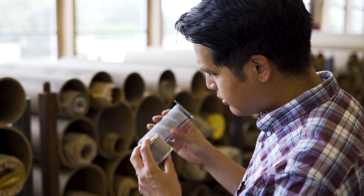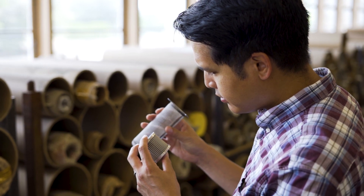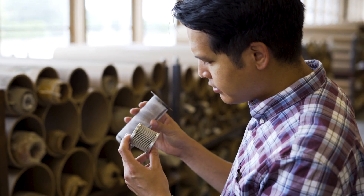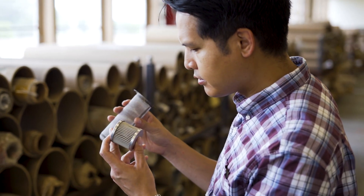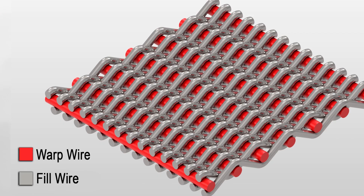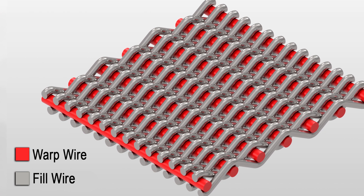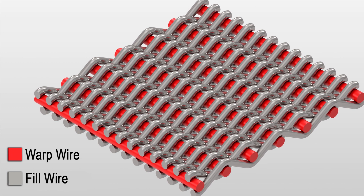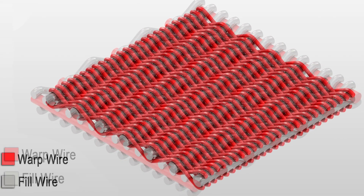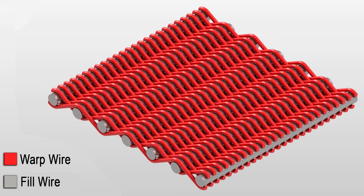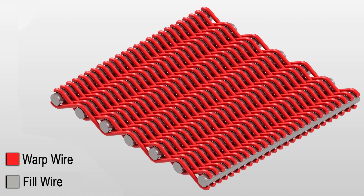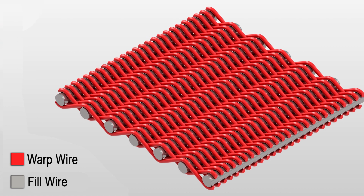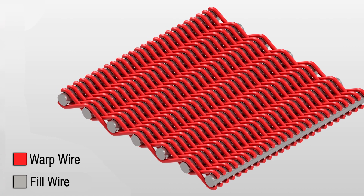Lastly, we have the so-called reverse versions of both the plain Dutch and Dutch twill weaves. With most Dutch weaves, the warp wires tend to be thicker than the fill wires. With the reverse patterns, the fill wires are thicker than the warp wires, essentially reversing the pattern of the weave.